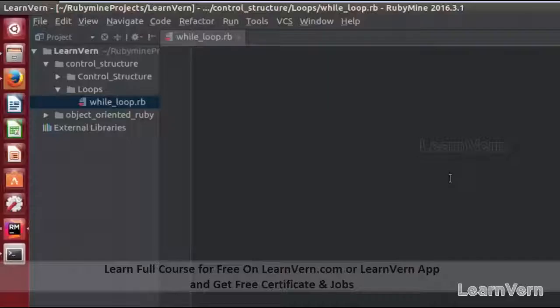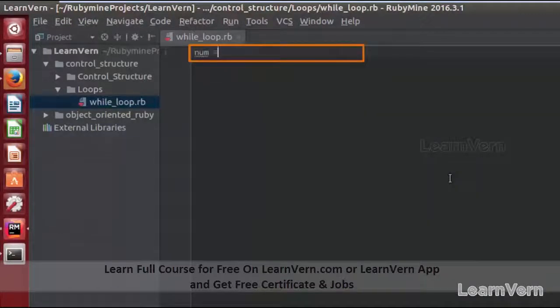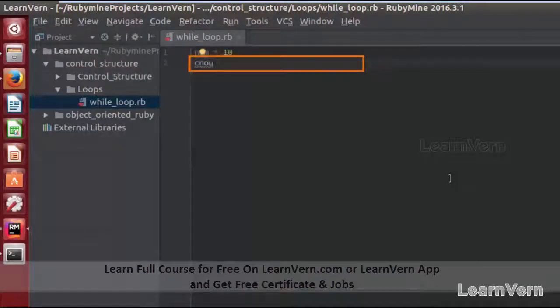While loop iterates till the condition is true and satisfied. So let's start. Let's create one variable number equal to 10, and another variable counter and let me assign its value to zero.